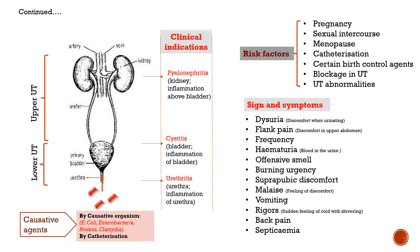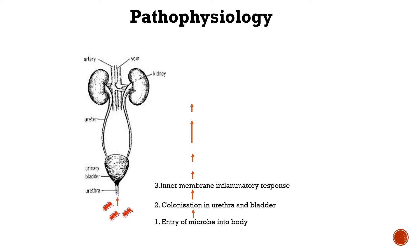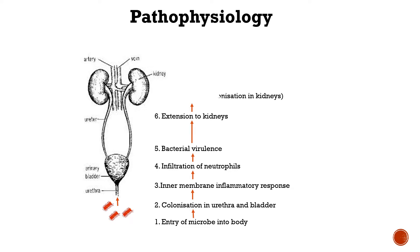Next we will discuss pathophysiology — that is, why this disease happens. In pathophysiology, we know there are causative agents. If these causative agents enter the body, they travel through the urethra into the urinary tract.